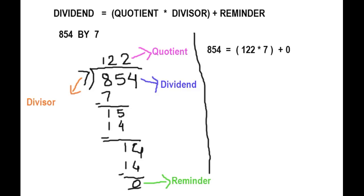Now solve this. If we multiply 122 into 7, we get 854, plus 0. This is 854. It means our solution is correct.